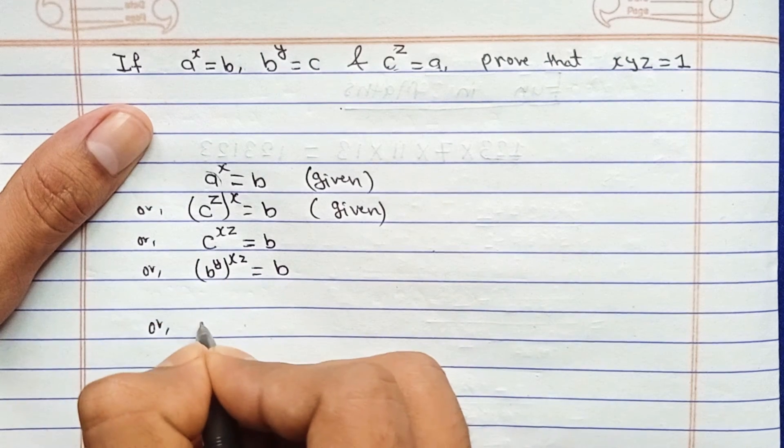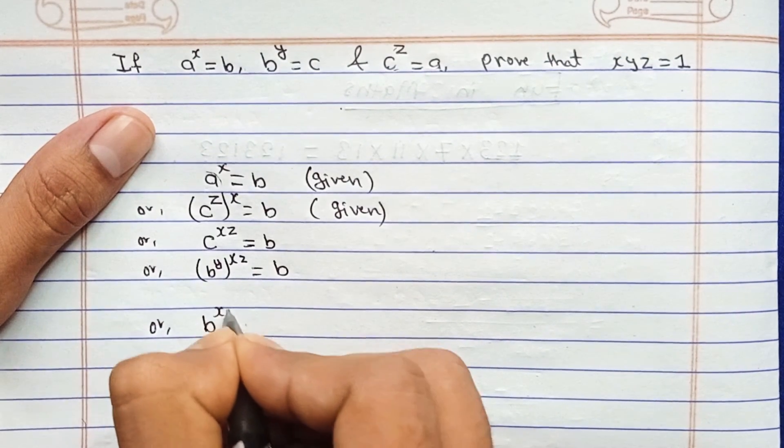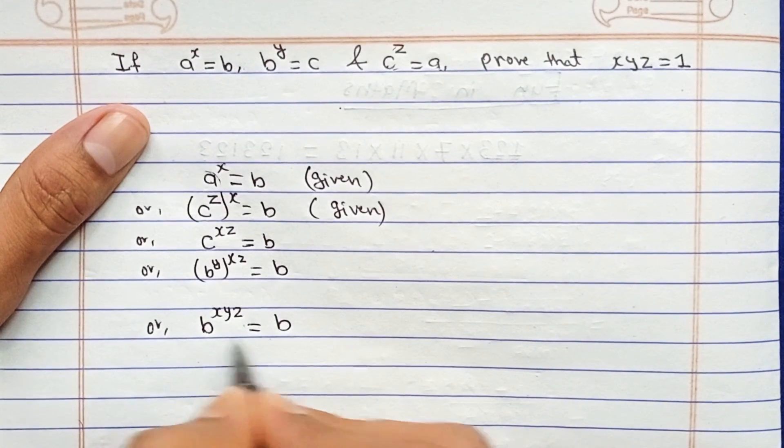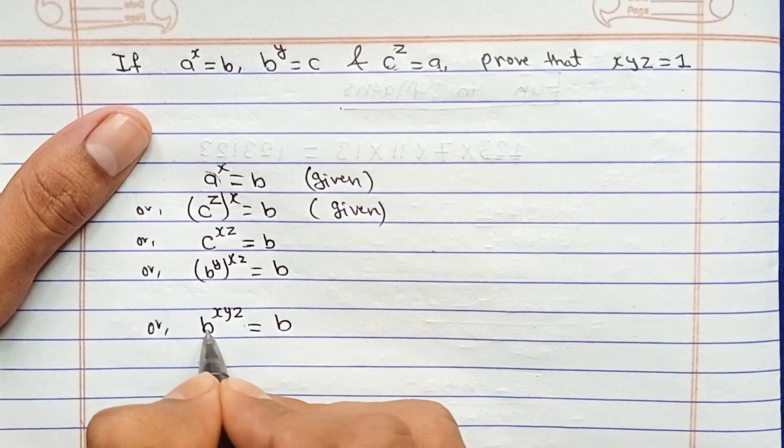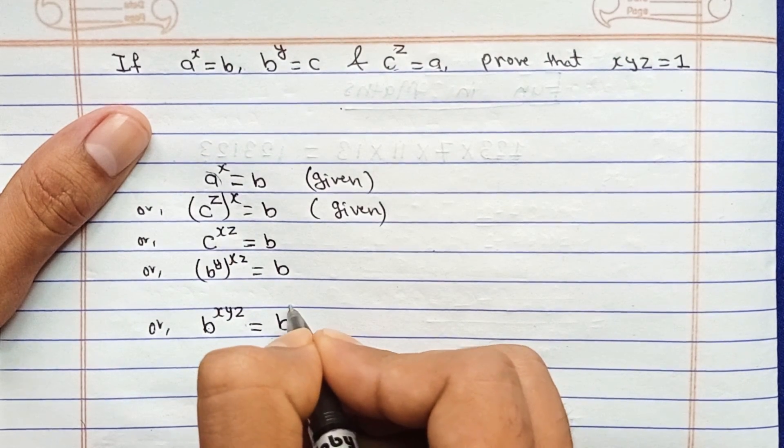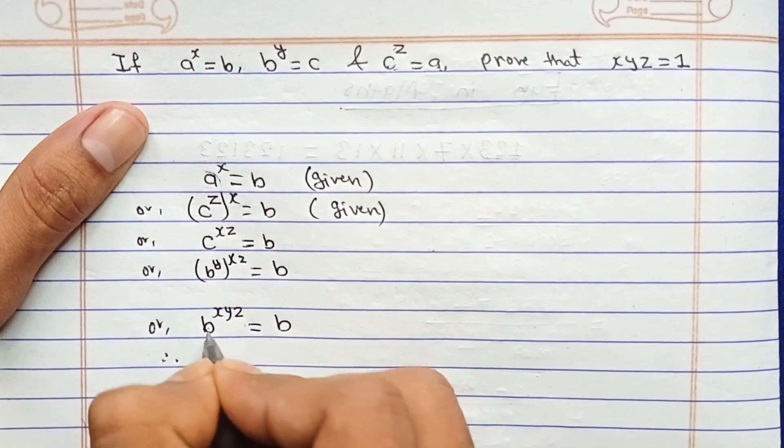This is the power to the power get multiplied again, so b to the power xyz equals to b. And on both sides the base are same, so b and b get cancelled. And if there is nothing in the power, then it can be said as 1.